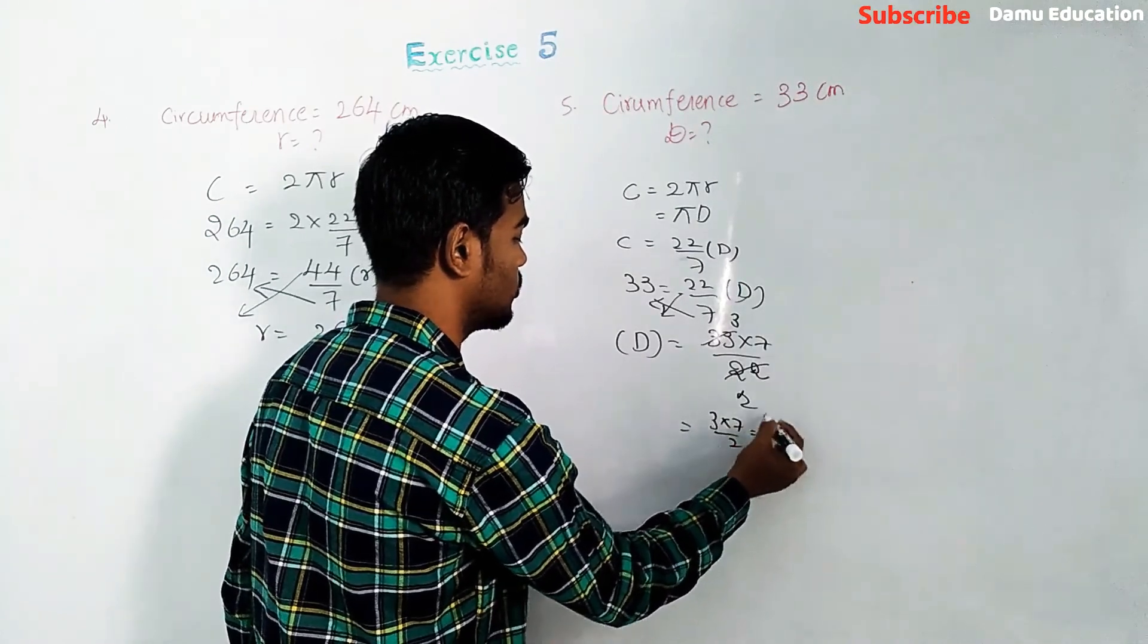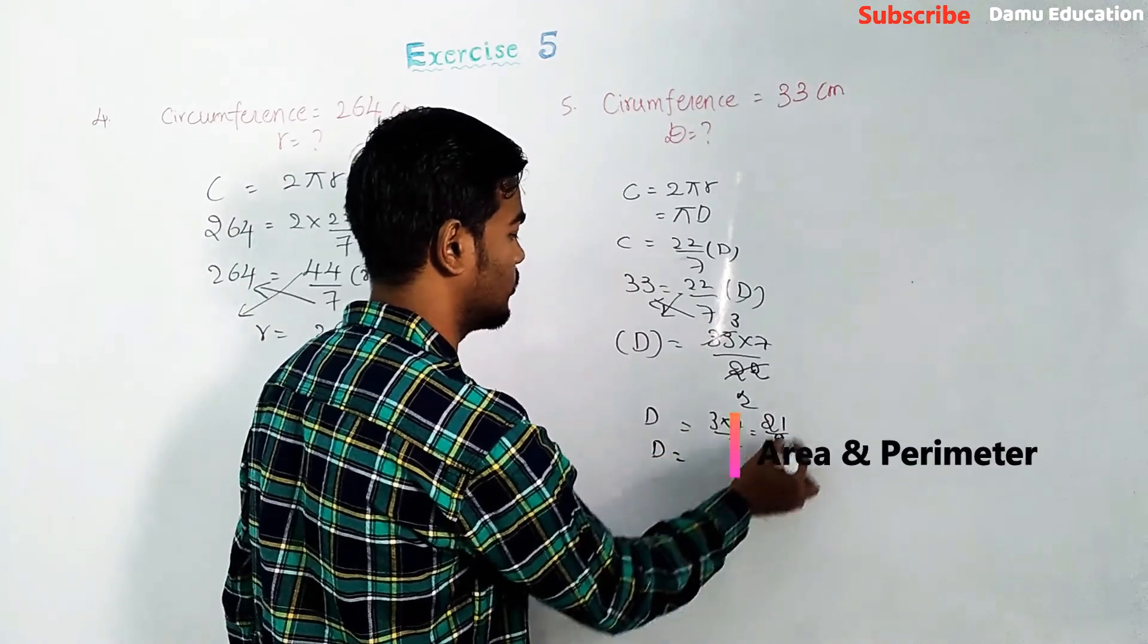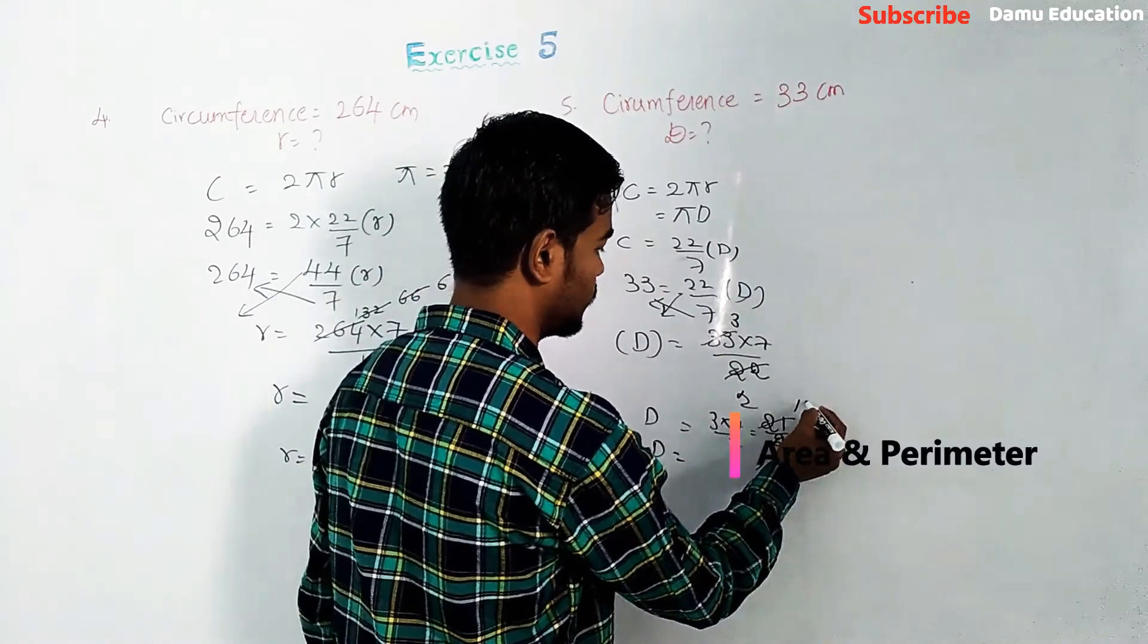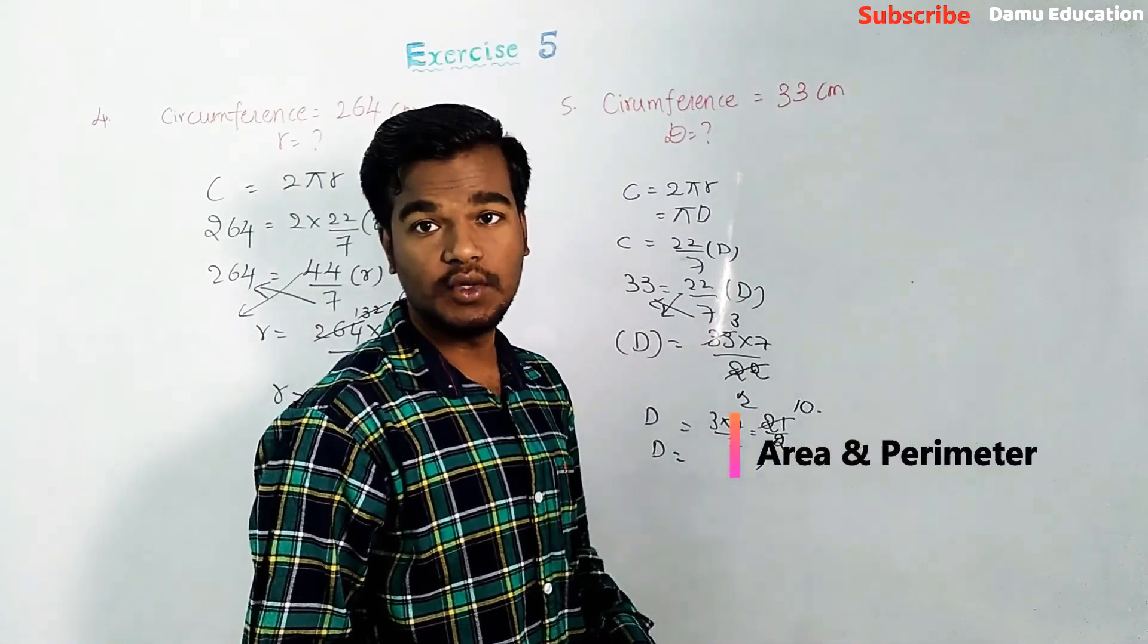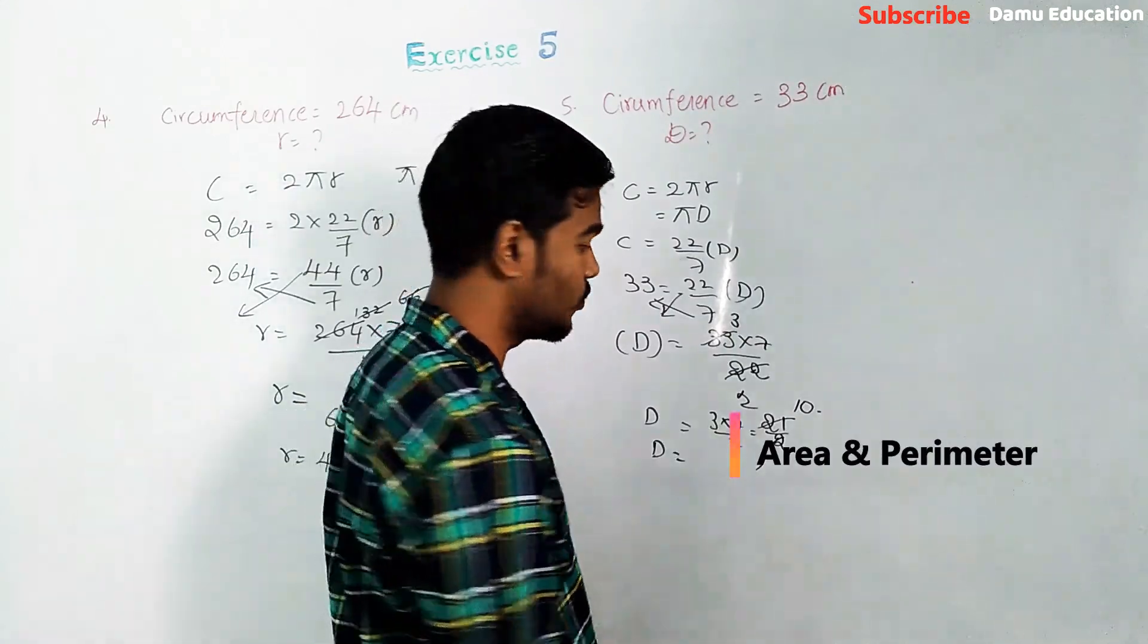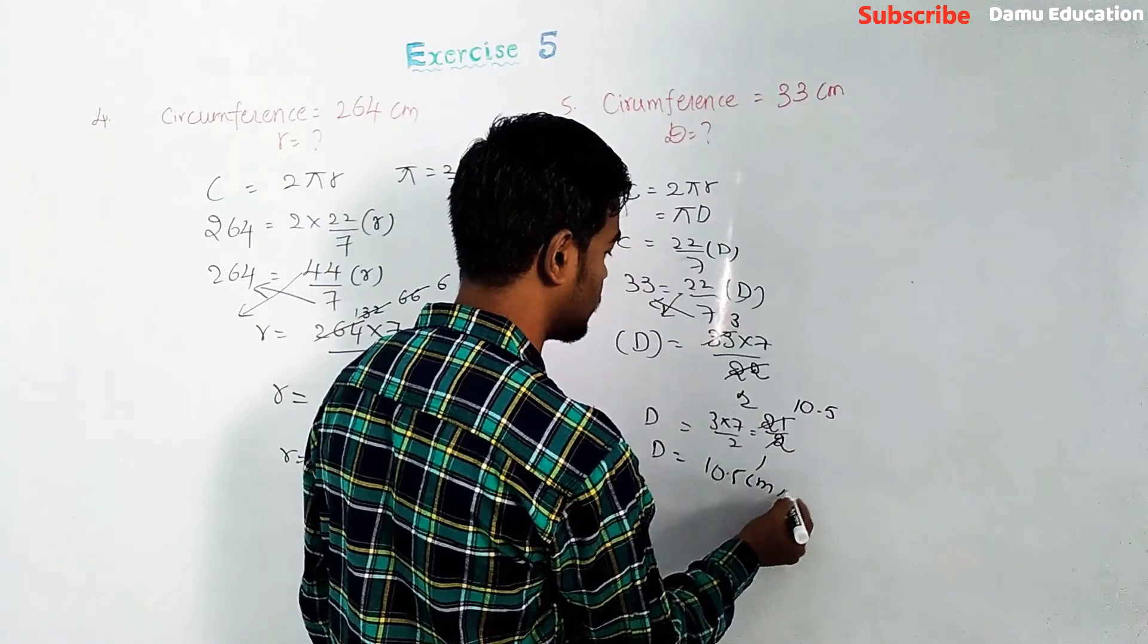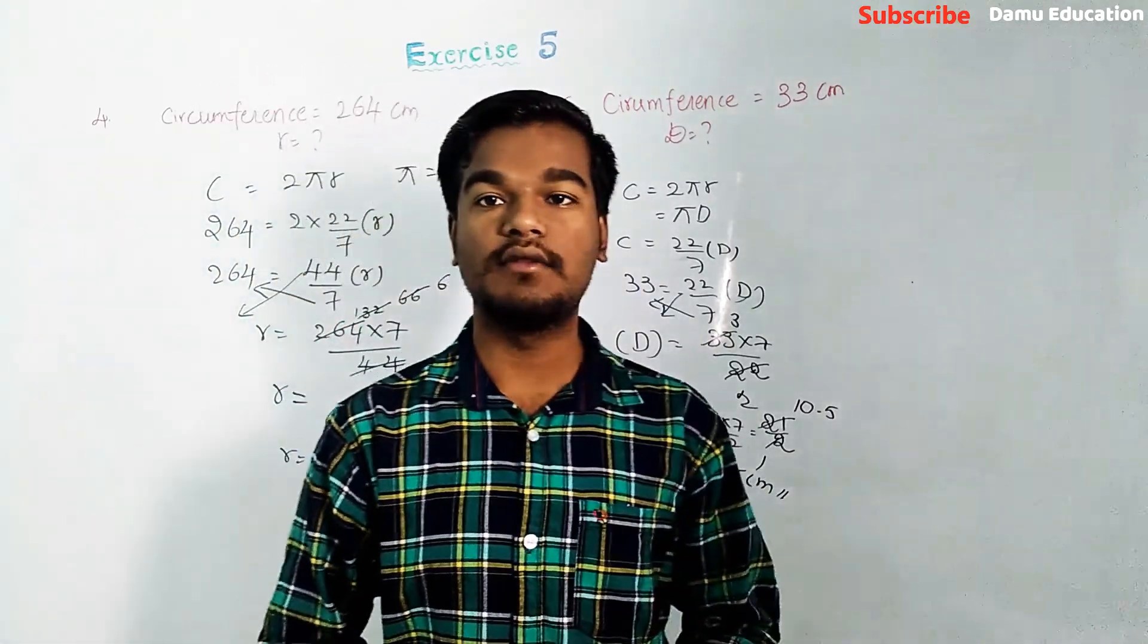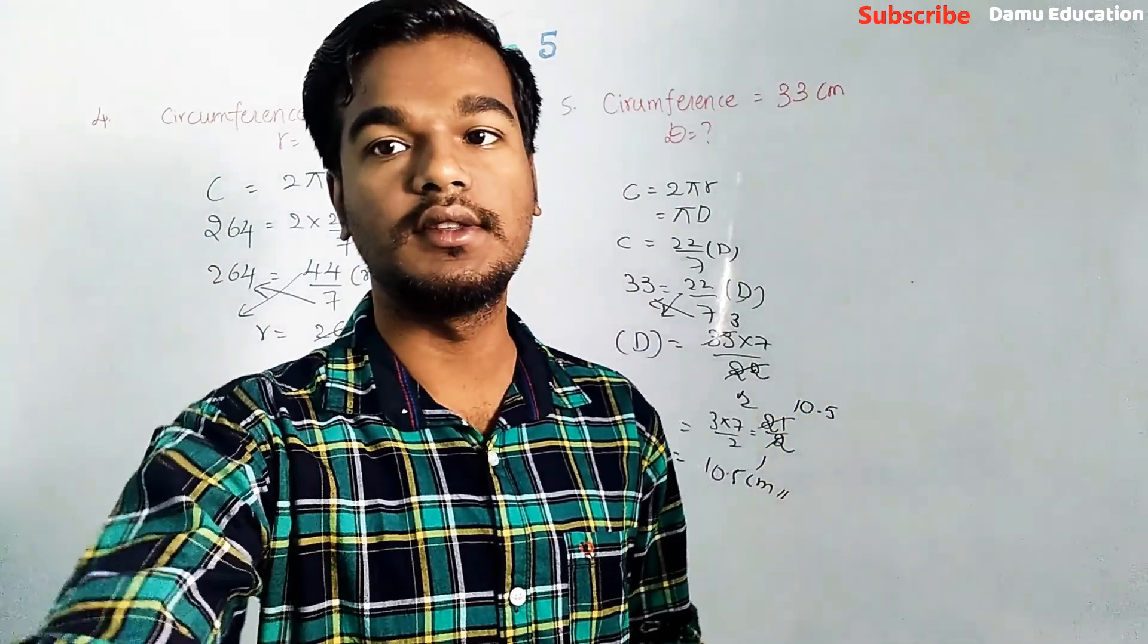Simplifying: 3 into 7 by 2. So diameter equals 10.5 centimeters. You can use 3.14 for this problem also and you will get the same answer. Thanks for watching this video.